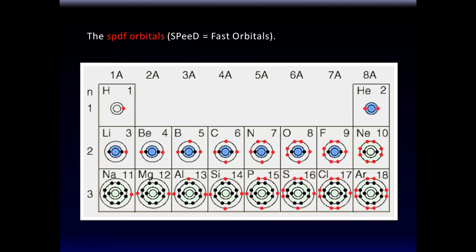So here's hydrogen and helium. Helium has a full orbital so it's a happy atom — a noble gas. Noble gases have full orbitals. Then lithium, beryllium, boron, carbon, nitrogen, oxygen, fluorine, and neon. Again we get to neon — its orbitals are full. And argon — its orbitals are full too. Argon is an inert gas used in medicine.